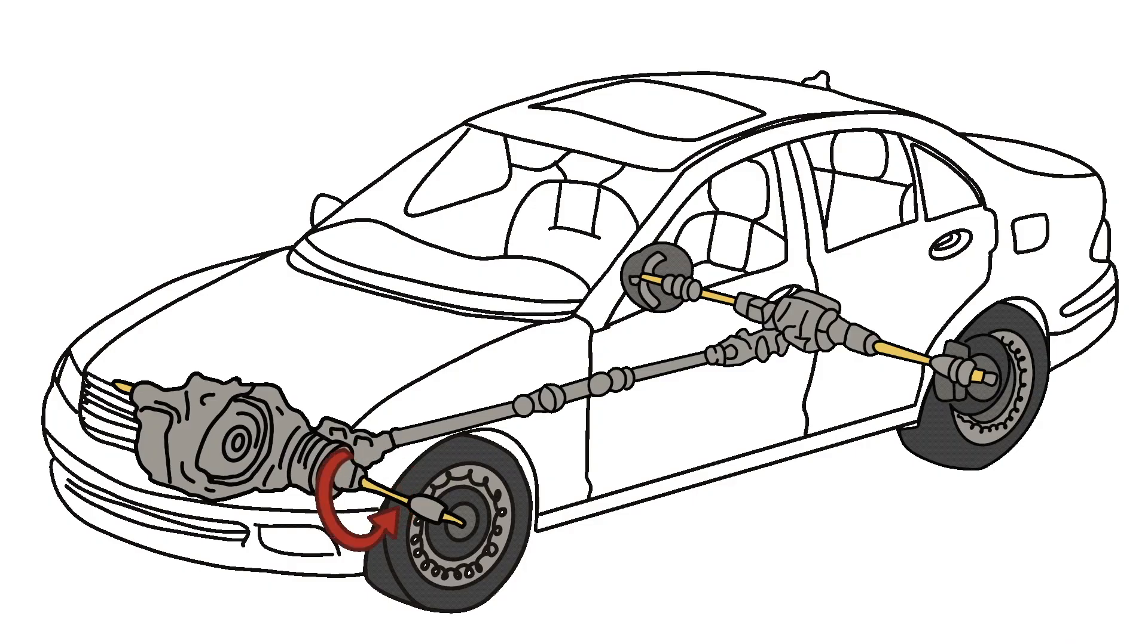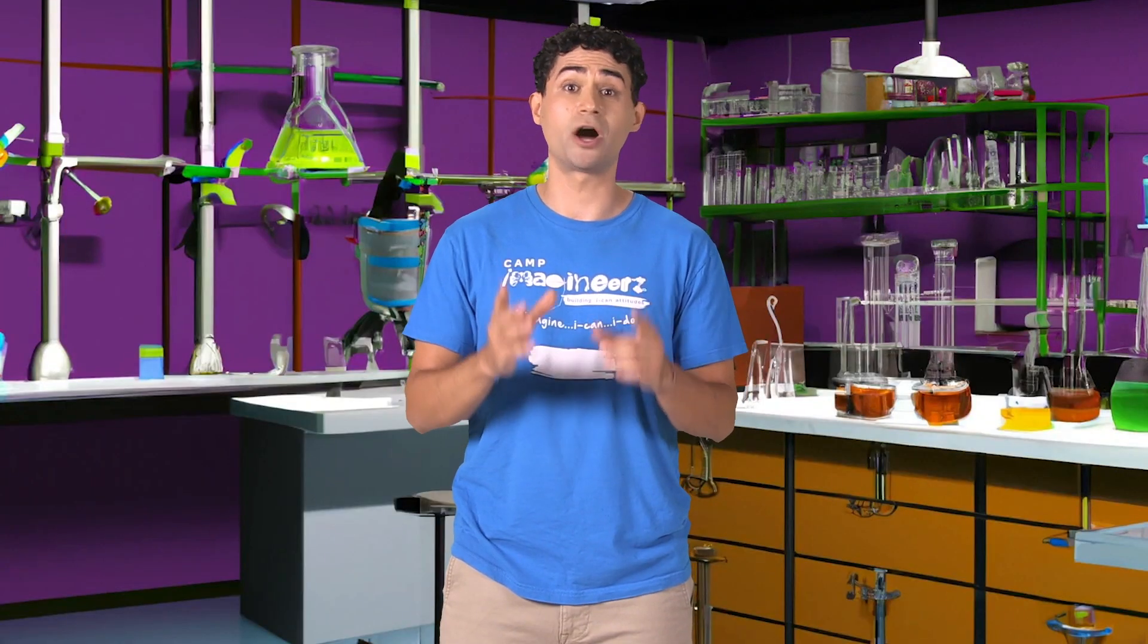cars should have as little friction as possible between moving parts, so as to not lose motion energy through heat. But they also need a lot of friction between the tires and the ground to increase traction.